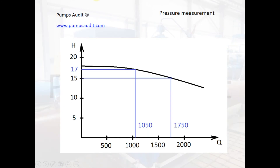This example illustrates how a relatively small difference in the pump head value can influence the flow value. A difference of two meters gives a difference in flow of 700 cubic meters per hour.